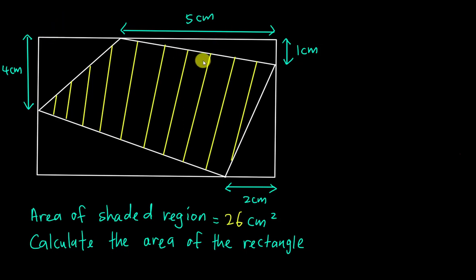Alright, let's look at this Year 8 math question. This question gives us a rectangle, and then we have some quadrilateral which is not a trapezium - it's just a random quadrilateral. They say the area of the shaded region is 26 cm². So I know the shaded area here is 26 centimeters squared. They ask us to calculate the area of the rectangle.